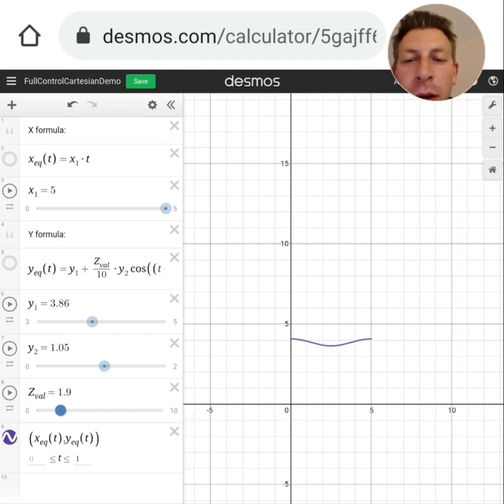And that means as we're going up through the print and our z-value is increasing from 0 to 10, our geometry is going to change in that way. So I've chosen the z-val there because that is a term that full control understands.